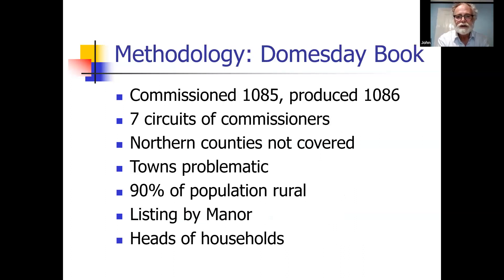Turning to methodology: the Domesday Book was commissioned in 1085 by William the Conqueror in Gloucester and produced in 1086. There's general agreement that it was produced by seven circuits of commissioners, each covering a number of different counties. We know there were seven circuits because there are slight differences between the information provided by each. Although each commissioner set off with a standard set of questions, the responses show differences — and moreover, there are differences between counties within one circuit. That's one reason for looking at a particular county, to avoid getting inconsistent data across different counties.